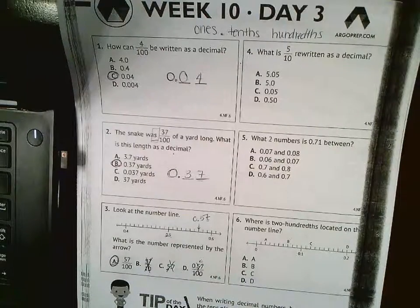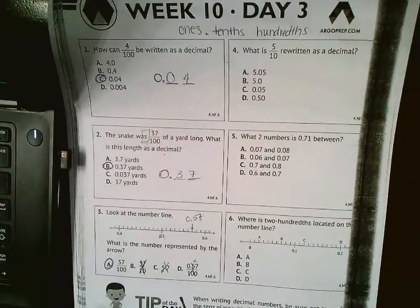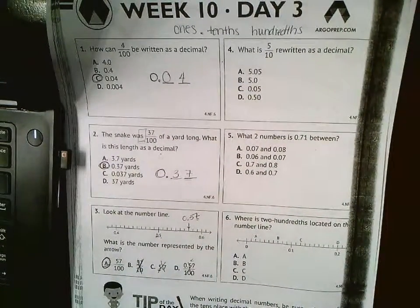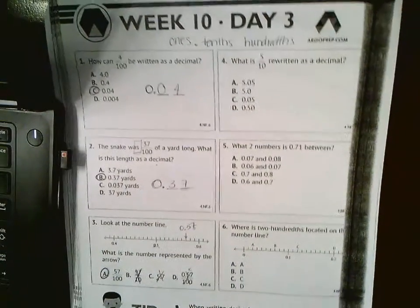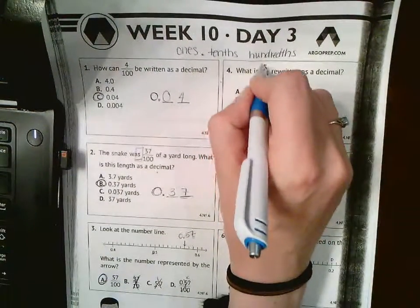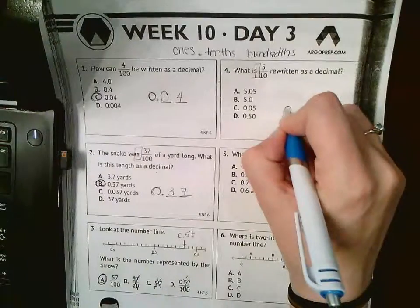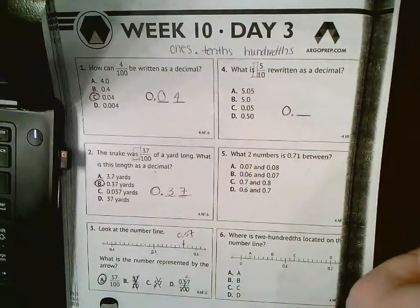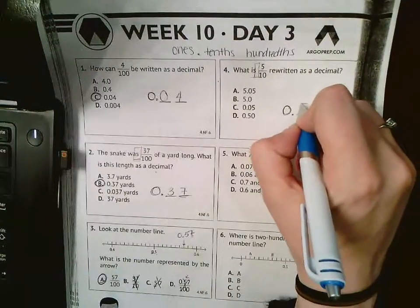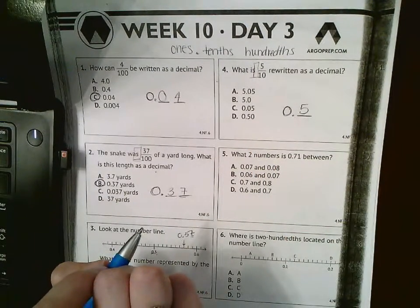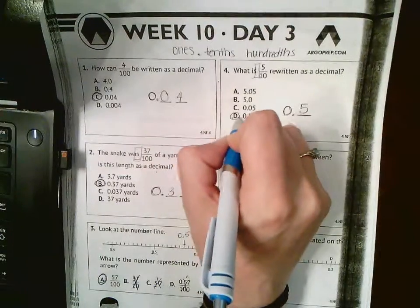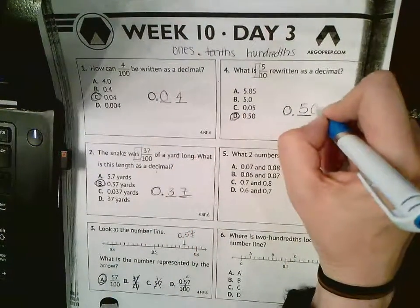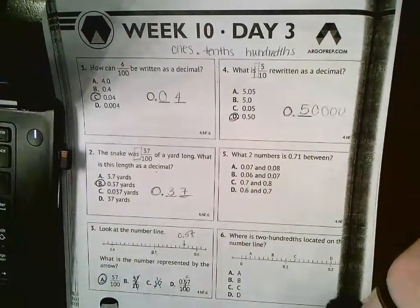Number 4: What is 5/10 rewritten as a decimal? Well, I don't have anything written out front, so I have zero for my whole number. Tenths is one place after the decimal point, and I've got 5 of them. So that matches D, because I can put as many zeros as I want on the end, as long as that 5 is in that tenths place.